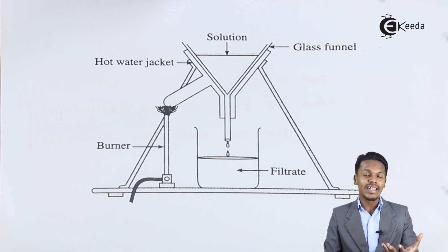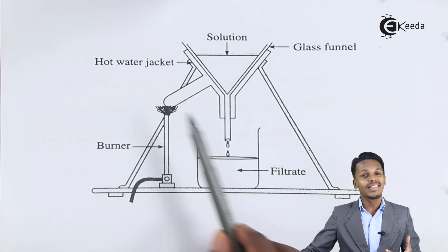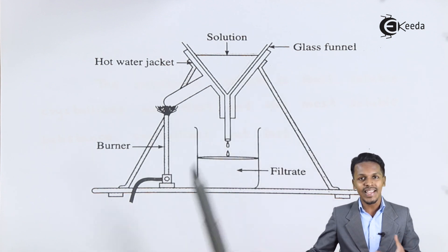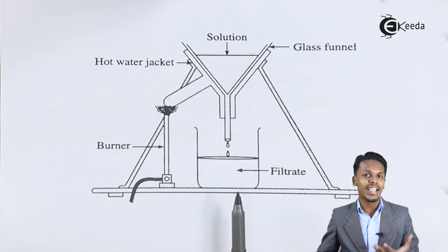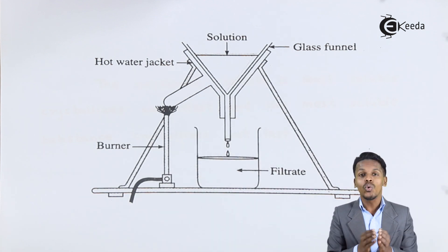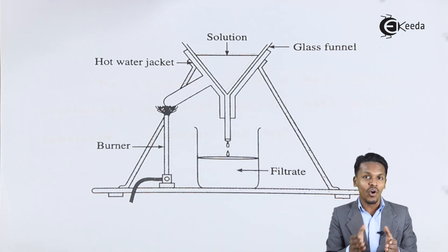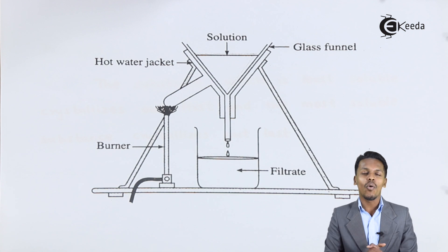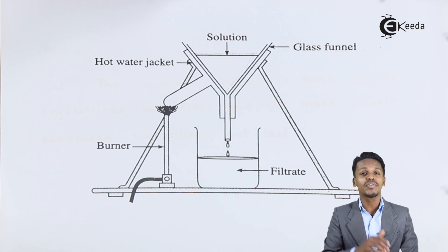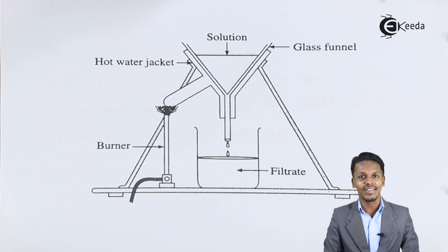We need to provide high temperature during the crystallization process, and that is how we can obtain two different components of a particular mixture. Thank you friends for watching this video. I hope you understood it clearly. Don't forget to subscribe to the Ekita channel.